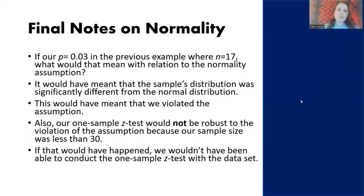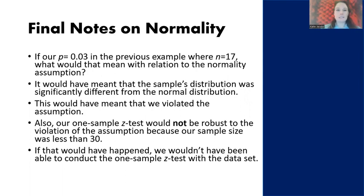If we have conditions where our p-value for the Shapiro-Wilk test for normality equals 0.03 and our sample size is 17, we would not be able to conduct the one-sample z-test with this data set, and we'd have to look for a different type of analysis to analyze our data.